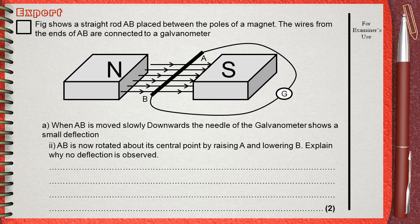Part II: AB is now rotated about its central point by raising A and lowering B. Explain why no deflection is observed.